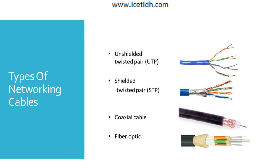The coaxial cable was not primarily developed for computer networks — it was developed for general purposes and was in use even before computer networks came into existence. Its use in computer networking has since been completely discontinued. At the beginning of computer networking, when there were no dedicated media cables available, network administrators began using coaxial cable to build networks because of its low cost and long durability. Coaxial cables were used in computer networking for nearly two decades, from the 1980s through the 1990s, and are no longer used to build any type of computer network.